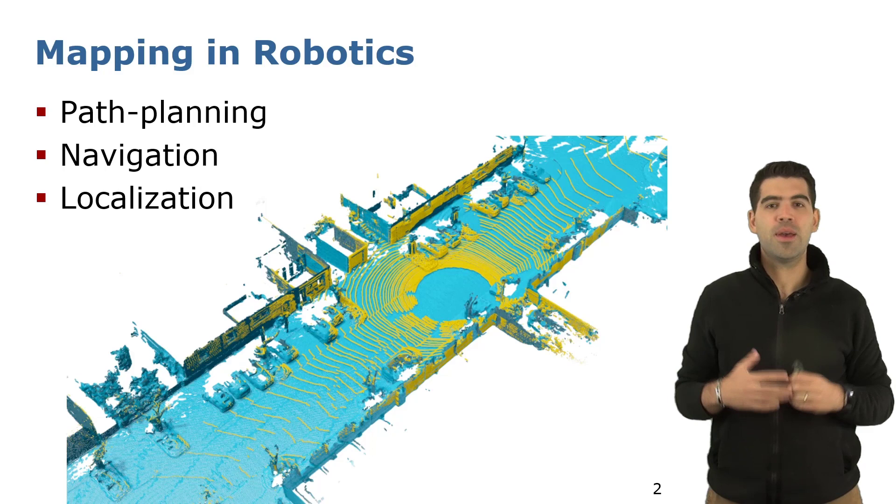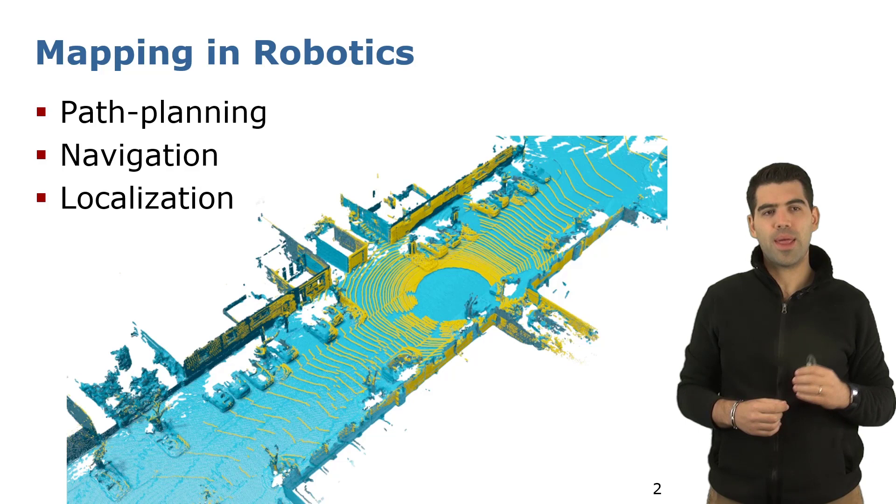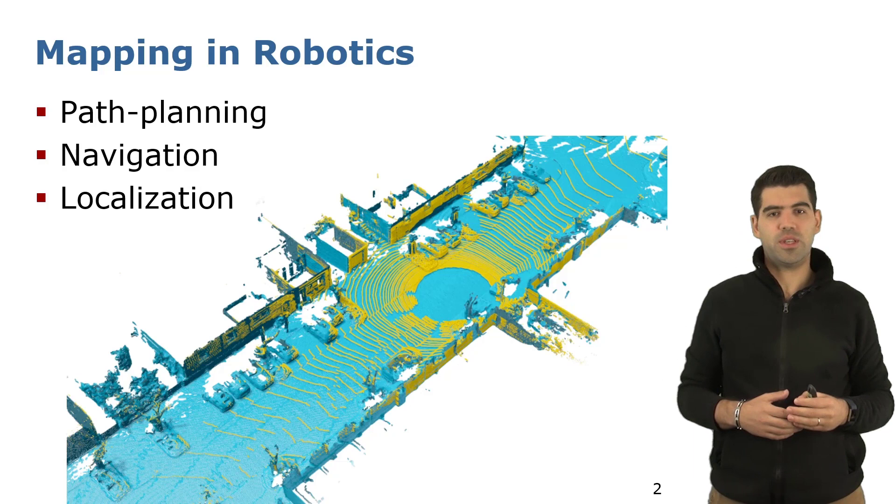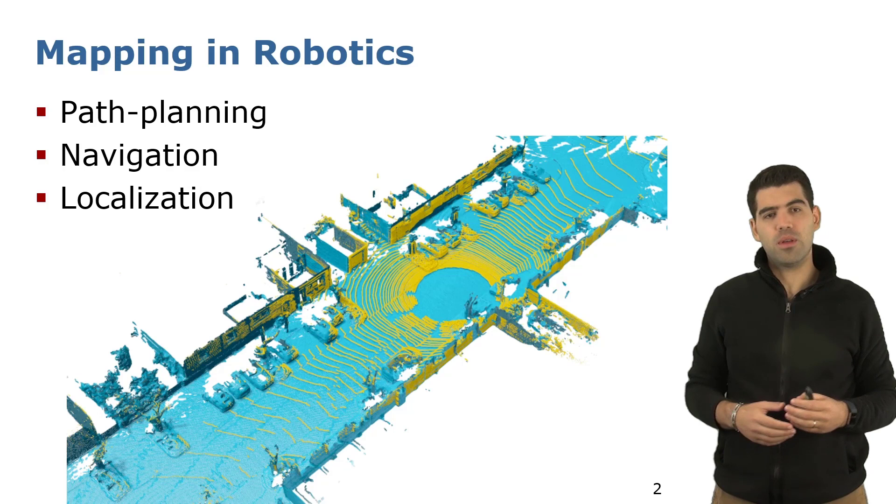Mapping systems that turn sensor data into a model of the environment are standard components in any mobile robot. Such systems enable those robots to solve downstream tasks such as path planning, navigation, or localization. In this example, we see an autonomous car localizing a LiDAR scan into the map. The intuition is that the better the quality of the map, the better the robot can solve the task.